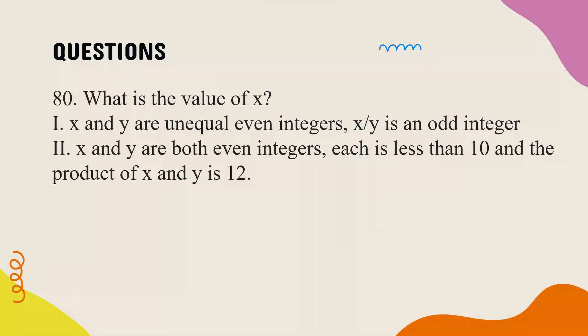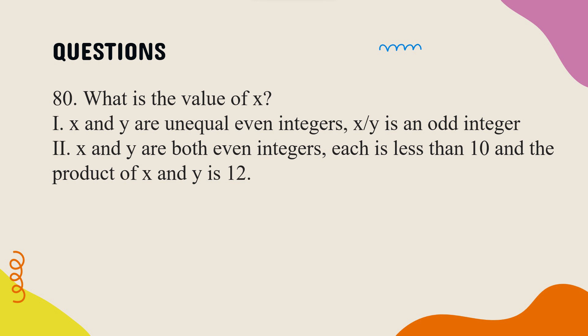This is the last problem in 2021. What is the value of x? Statement 1: x and y are unequal even integers, and x divided by y is an odd integer. Statement 2: x and y are both even integers, each less than 10, and the product of x and y is 12.